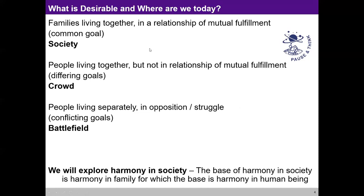The first possibility can be called a society — a relationship of mutual fulfillment. The second possibility is a crowd — moving here and there, nobody concerned about the other, differing goals. The third possibility is a battlefield. We can see how many resources we are investing today in the name of war or settling internal feuds. The harmony in society has its base in harmony in the family, which has its base in harmony in the human being.